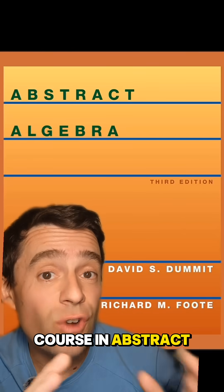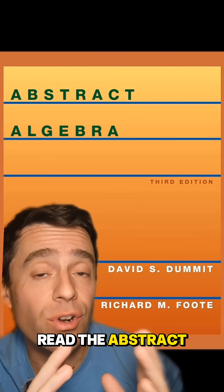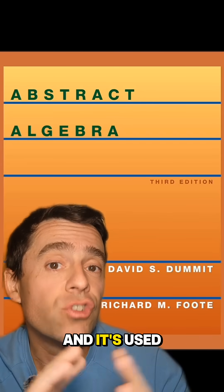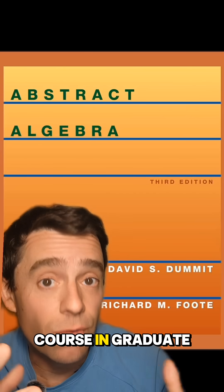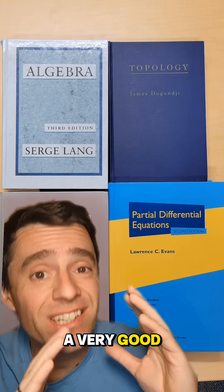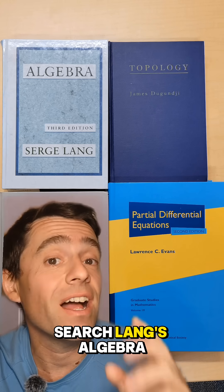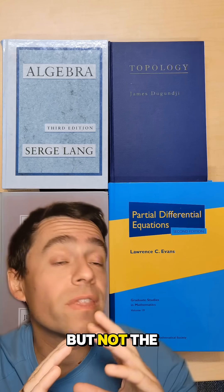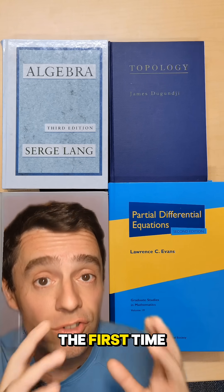For a first course in abstract algebra at the graduate level, you should absolutely read the abstract algebra book by Dummit and Foote, which is a very good book and is used in many places in the U.S. for the first course in graduate abstract algebra. And only if you have had a very good exposure to abstract algebra, you should go and look at Serge Lang's Algebra, which is a very good resource, but not the very first book I would recommend for someone learning algebra for the first time.